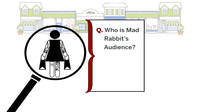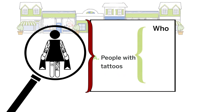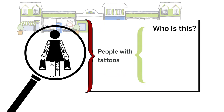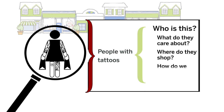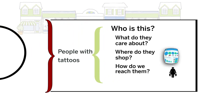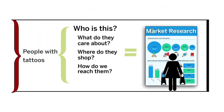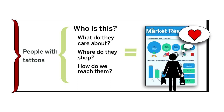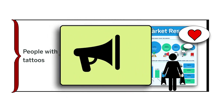It's easy to name MadRabbit's audience: people who have tattoos. That's a start. But who is the tattoo consumer? What do they care about? Where do they shop? How do we reach them? Market research reports detail the attitudes, opinions, and behaviors of consumers who buy certain kinds of things or engage in particular activities. This can help you tailor and place your message.